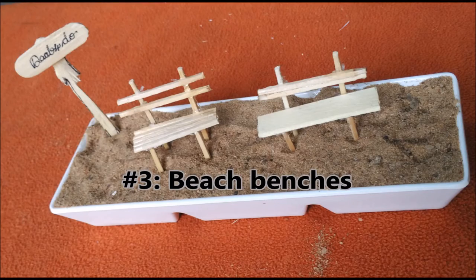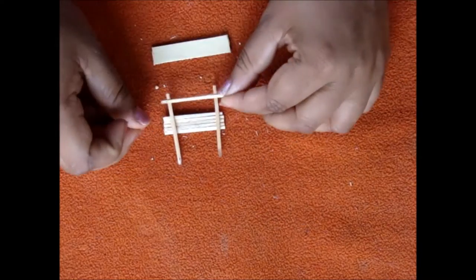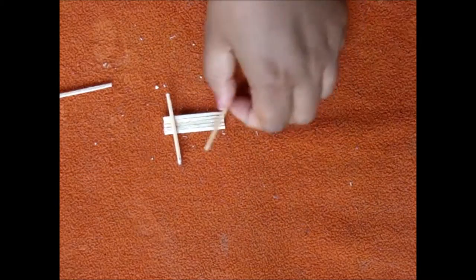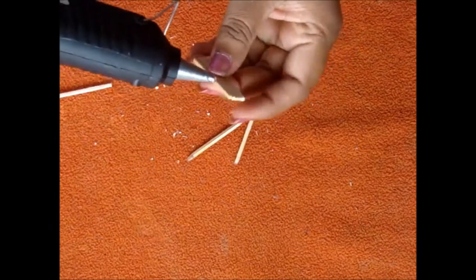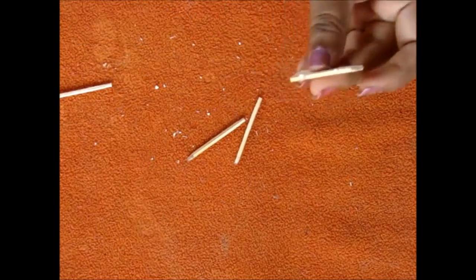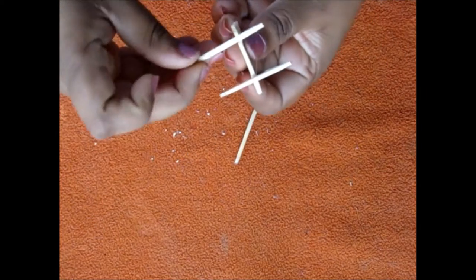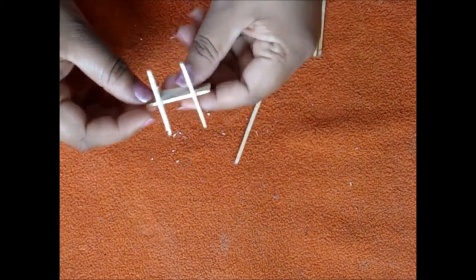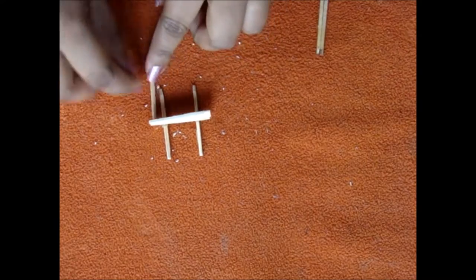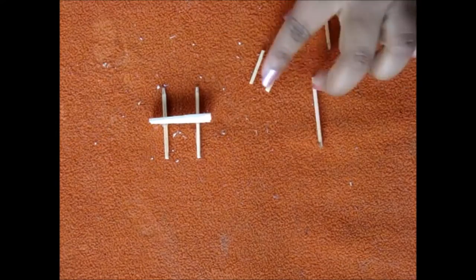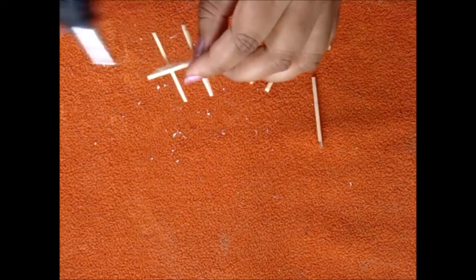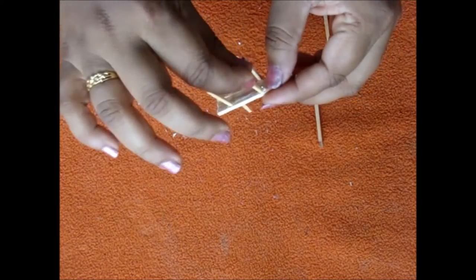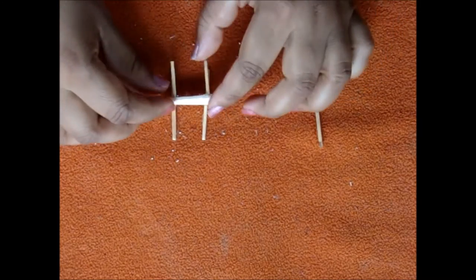Beach benches. Take two planks one with popsicle and one with ice cream stick or one with matchsticks and attach two pieces of beheaded matchsticks. At the back and for the bottom measure matchsticks and cut them equally and from the bottom attach them. We have four legs.